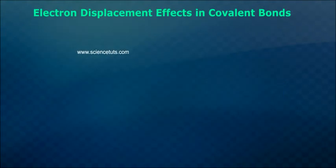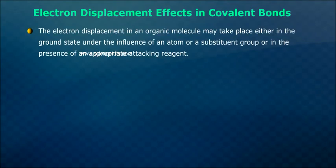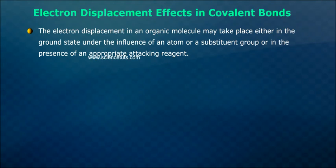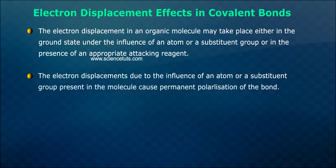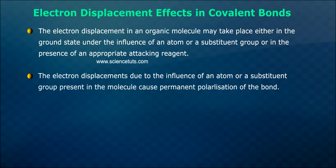Electron displacement effects in covalent bonds. The electron displacement in an organic molecule may take place either in the ground state under the influence of an atom or a substituent group, or in the presence of an appropriate attacking reagent. Electron displacement due to the influence of an atom or substituent group present in the molecule causes permanent polarization of the bond.